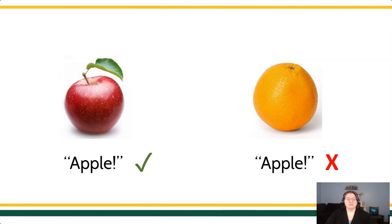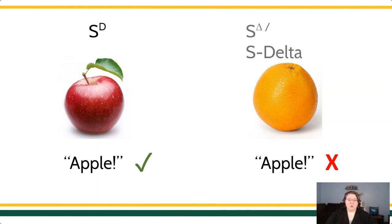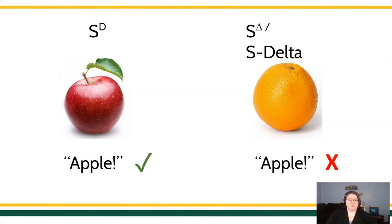In the presence of other stimuli, that same response will not contact reinforcement. In this case, the apple is the SD for the response 'Apple,' and the orange is the S-delta — 'Apple' will not be reinforced in the presence of that stimulus.